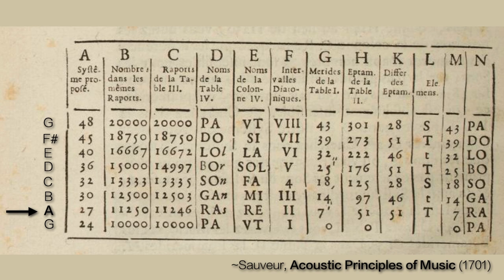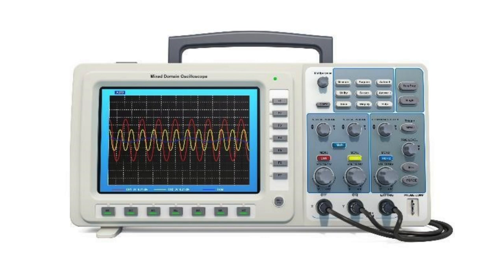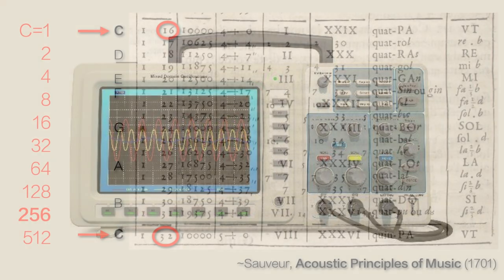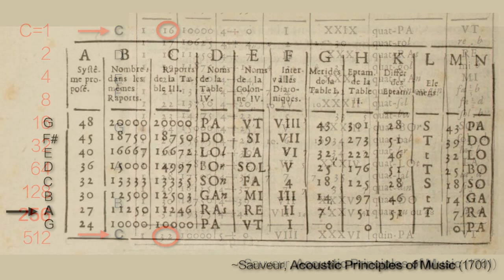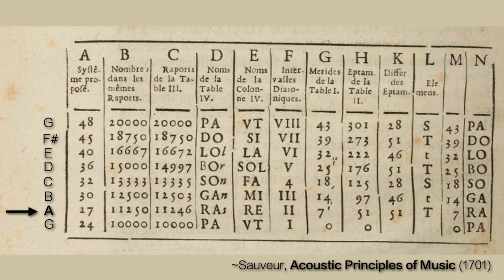Although we think of our ancestors as backward and lacking sophisticated technology, they could determine frequency simply by thinking it through. That we must rely on the crutch of technological machines would cause them to consider us the generation lacking sophistication. In 1713, Sauveur proposed that all music be standardized around the C4 frequency of 256 cycles per second — the harmonic value of C, which begins the harmonic series at 1 Hz and scales up through its octaves to a middle C value of 256 Hz. When Sauveur calculated the frequencies of the musical scale using beats and ratios, most of those frequencies corresponded to harmonic values, as we can see in his own work.